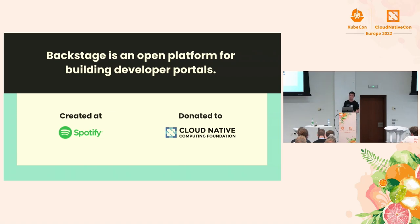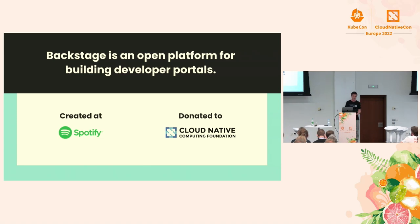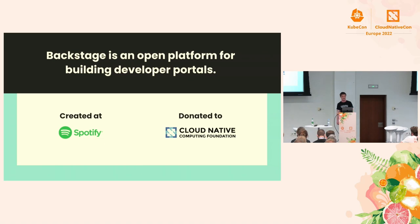It took us longer and longer to onboard people. Our headcount went up, but our developer effectiveness was going down. We were measuring the time to the 10th PR — from when the person started until the 10th time they made a PR to our internal GitHub. In 2016, that metric hit about 60 days, and we somewhat panicked and set out to figure out what to do about it. What we did was build Backstage.